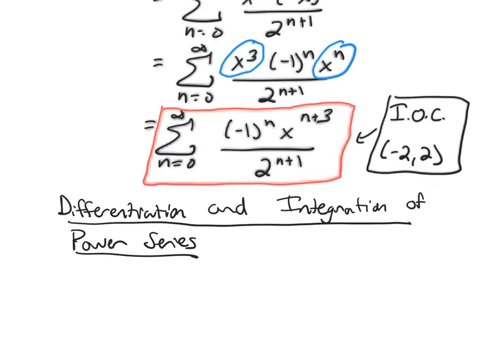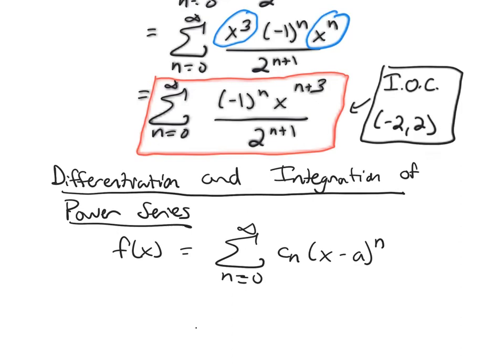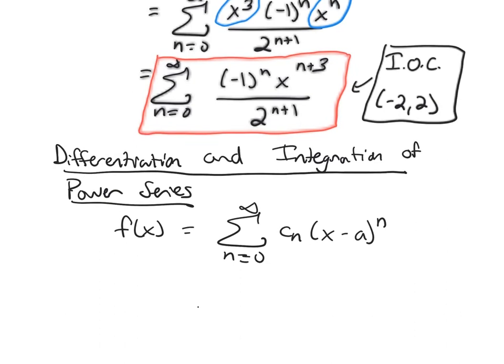So let's say I have a power series representation of some function. So in general, my power series are centered at a. And all the examples we've done so far today, a has been 0, so it's just x to a power. And let's think for a second. On the left-hand side, I have a function. And on the right-hand side, I have a power series.